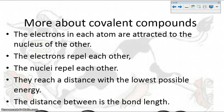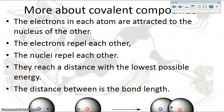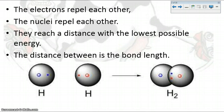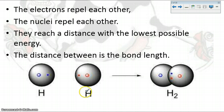They reach a distance where they are at the lowest possible energy, so the repulsions are the lowest. This distance between the two nuclei is what we call the bond length. Here you see two hydrogen atoms approaching one another. Their electrons repel, as do their nuclei, but the electron of one is attracted to the nucleus of the other, which causes them to come together, and then they reach an optimal distance — that's our bond length.